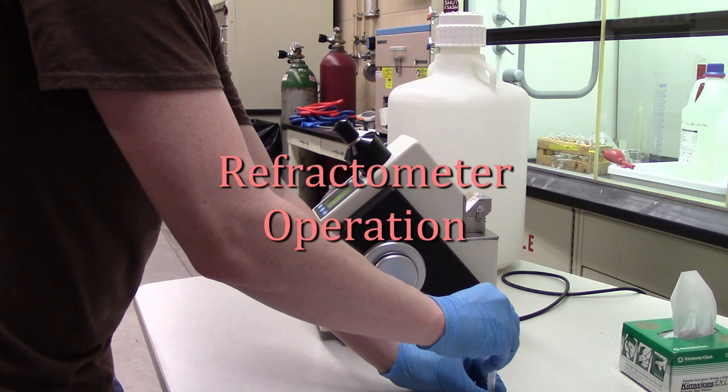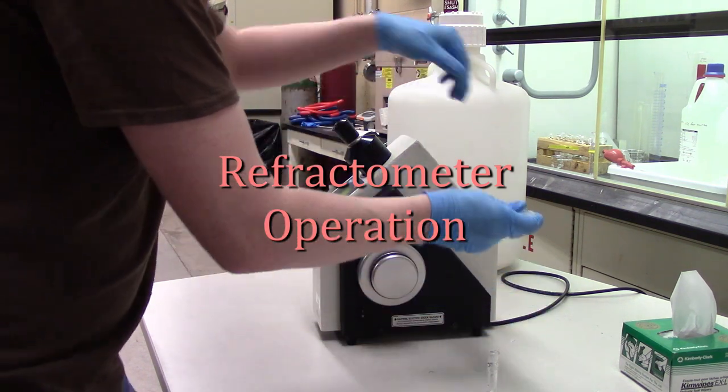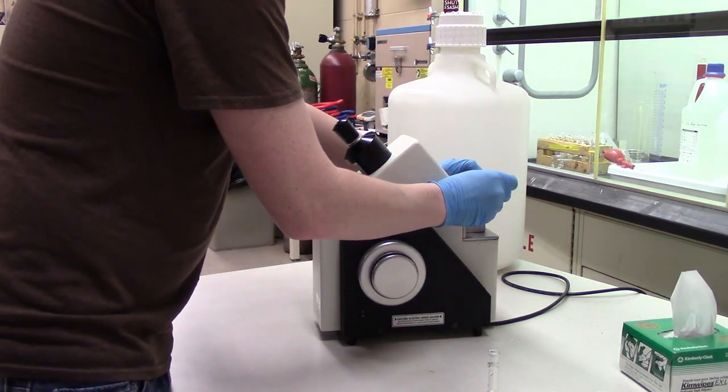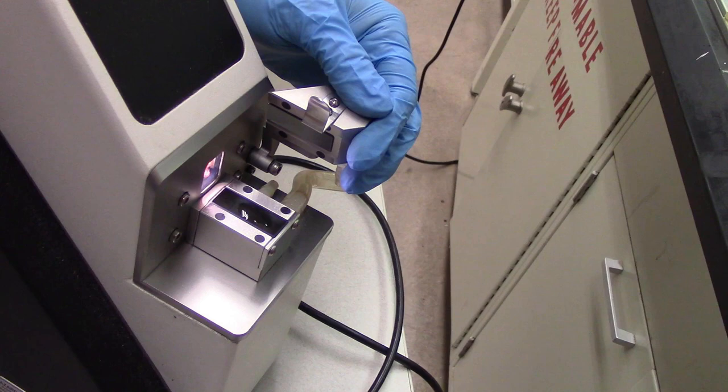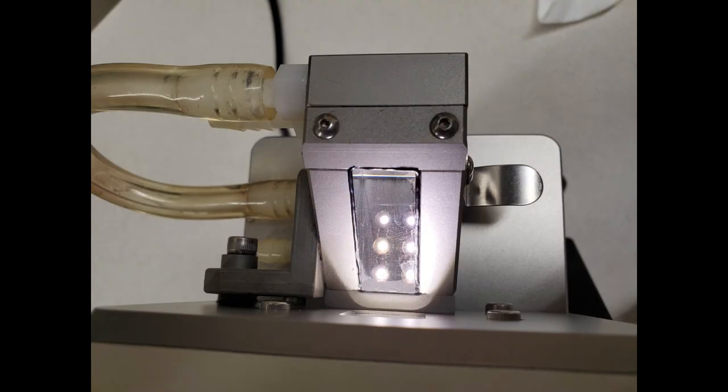To analyze a sample, use a dropper or a similar instrument to transfer a few drops onto the prism. Ideally, there should be enough liquid to wet the entire surface of the prism when closed.